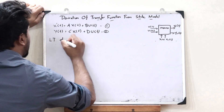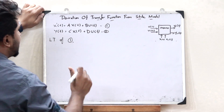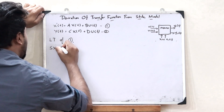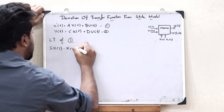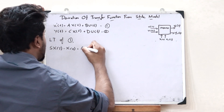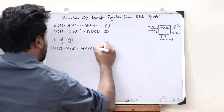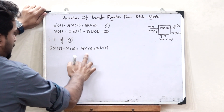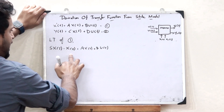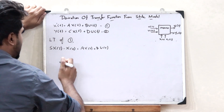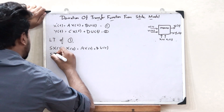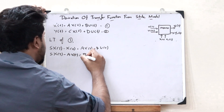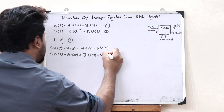First, let us take the Laplace transform of equation number 1. Taking the Laplace transform of equation number 1, we would get: the Laplace transform of x-dot of t is given as s·X(s) minus x(0), which is equal to A·X(s) plus B·U(s). Now let us take the X(s) terms to one side and x(0) to the other, giving us s·X(s) minus A·X(s) equals B·U(s) plus x(0).